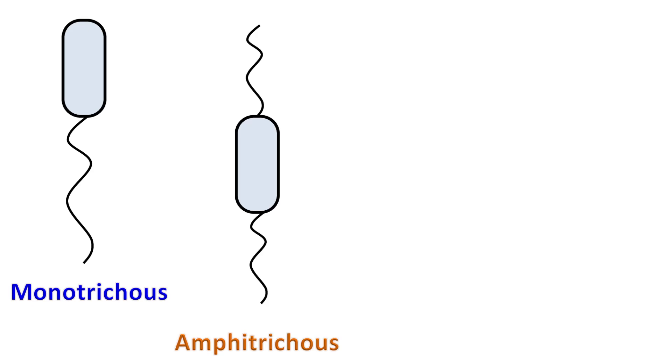Amphitrichous cells have two flagella. Lophotrichous cells have a cluster of flagella on the poles.